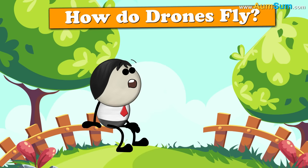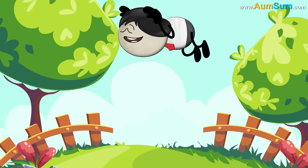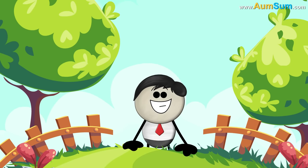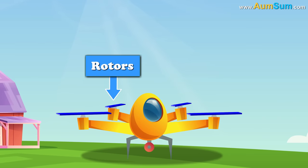How do drones fly? Simple. Like birds, they flap their wings. Oh AumSum. Drones commonly make use of rotors to fly.